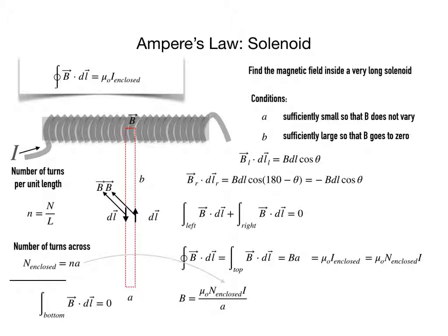So with that value we go back to our result here from Ampere's law where it says magnetic field is equal to μ₀ n_enclosed I over a and we replace n_enclosed with the value of the number of turns per unit length multiplied by the side a.